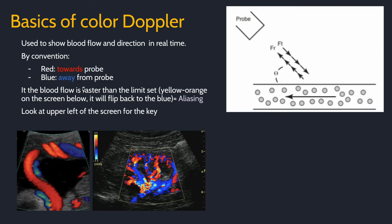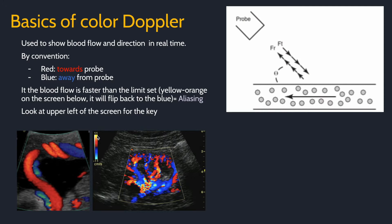Color Doppler is useful for showing blood flow and direction in real time. By convention, red is towards the probe and blue is away from the probe. You can check in the upper left of the screen for the scale and the direction. You should know that if the blood flows faster than the limit set, it will flip back to the beginning. So here, as blood moves away from the probe, it will be blue and then go to white. However, if it goes above 11 centimeters per second here, it will flip back to red. This is called aliasing.